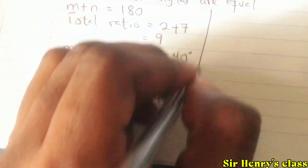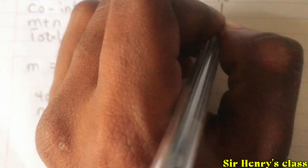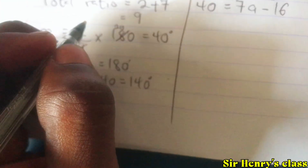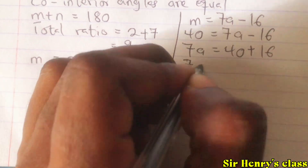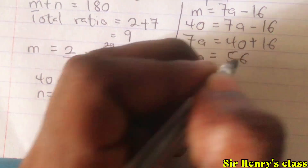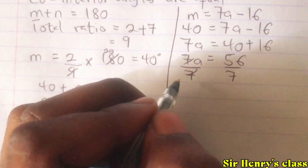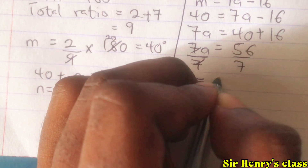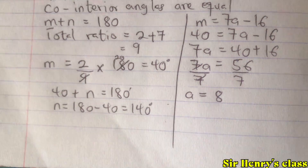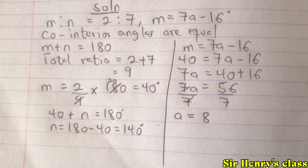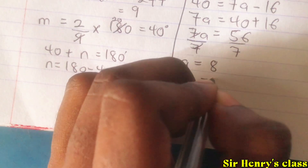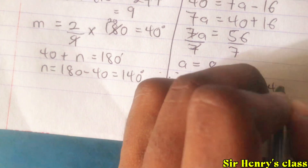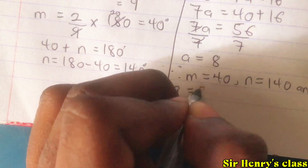n equals 140 degrees. Now we still need to find the value of a. We said m equals 7a minus 16, and m is 40, so 40 equals 7a minus 16. Therefore 7a equals 40 plus 16, which gives 56. Dividing 56 by 7 gives a equals 8. Therefore, m equals 40 degrees, n equals 140 degrees, and a equals 8.